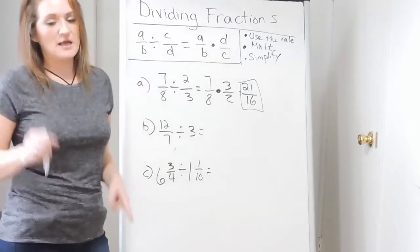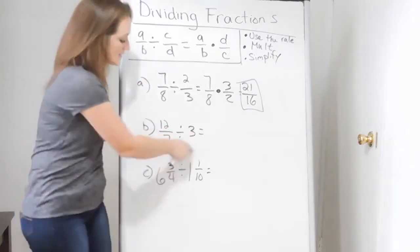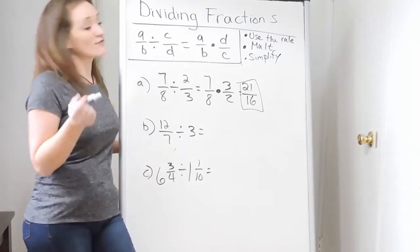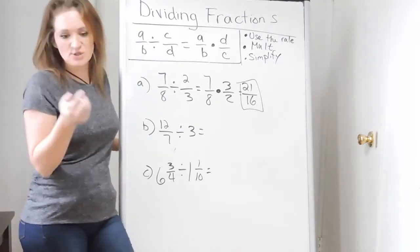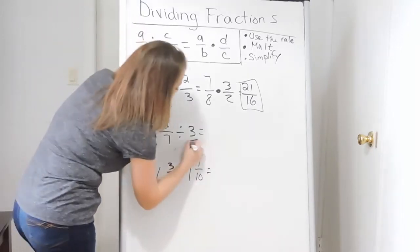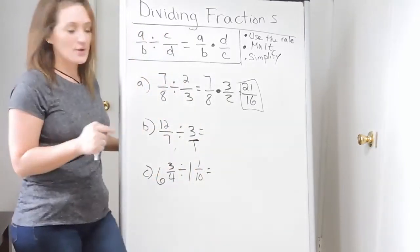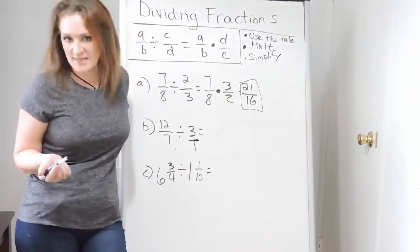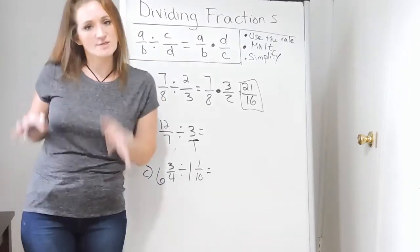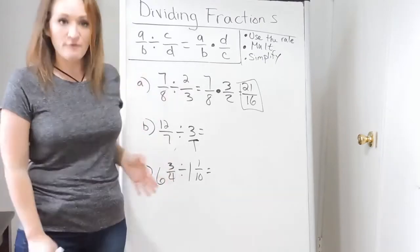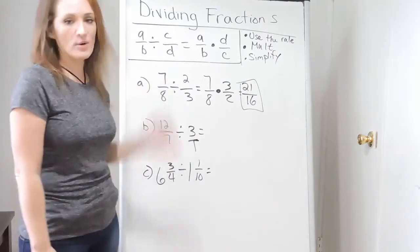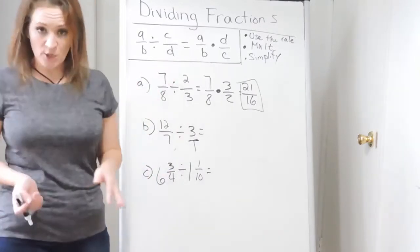Example B: 12 over 7 divided by 3. Whenever you have a whole number when dealing with fractions, turn it into a fraction. Put the 3 over 1 — since 3 over 1 is the same thing as 3. Do this to avoid confusion about what to do with the number. Any time you see a whole number, put it over one and then continue.